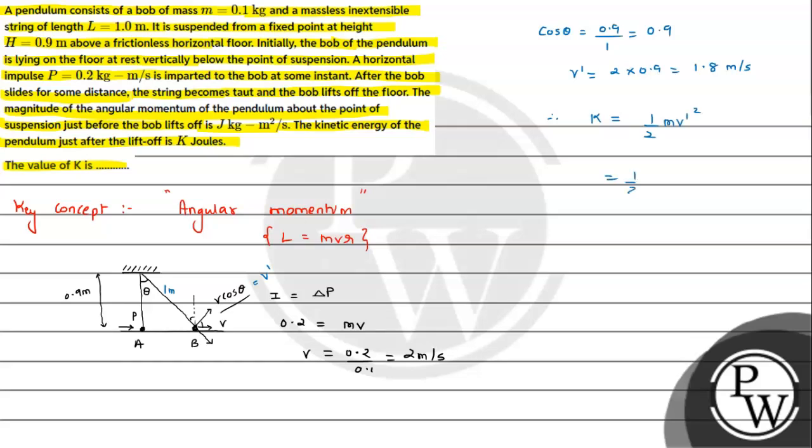Half m, m value is 0.1, and V dash value, it is V cos theta, which we calculated as 1.8. So 1.8 squared.